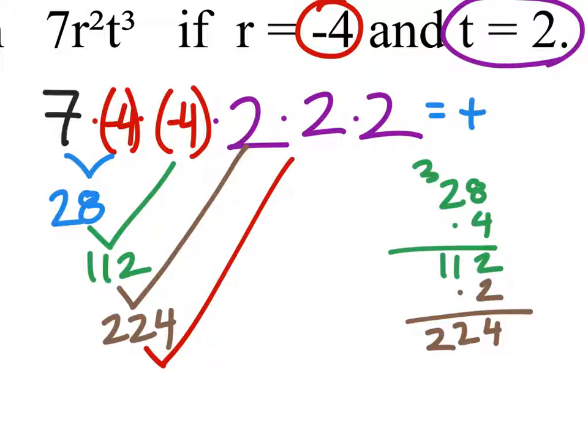Now I can do 224 times 2 again. And I get 2 times 4 is 8. 2 times 2 is 4. 2 times 2 is 4. That's 448.